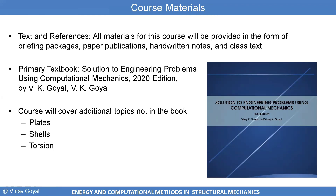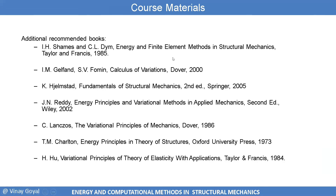The course materials will be provided in the form of a briefing package, paper publications, handwritten notes, and the class textbook, which I have written. The book will be provided via Zoom as explained in Piazza. This textbook is not required but is strongly recommended. The course will cover additional topics not in the book, like plates and shells. Additional recommended books include the Energy and Finite Element Methods in Structural Mechanics book, the Gelfand and Fomin calculus of variations book, and other references available at very reasonable prices.